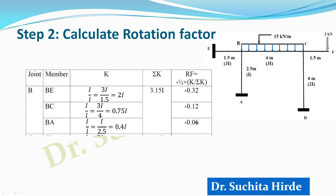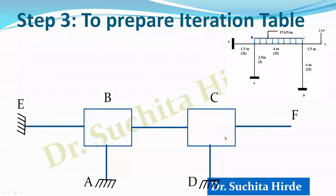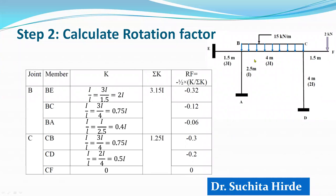After calculating the rotation factor at any joint, you must check whether the sum of rotation factors equals -0.5. Adding the values at joint B gives -0.5, confirming correctness. At joint C there are three members: CB, CD, and CF. B is the continuous end, D is the fixed end, so their relative stiffness is I/L. CF is a cantilever, so its relative stiffness is 0. The rotation factors at C come out to -0.3 and -0.2, summing to -0.5. Since this is a non-sway problem, we do not need to calculate a displacement factor.